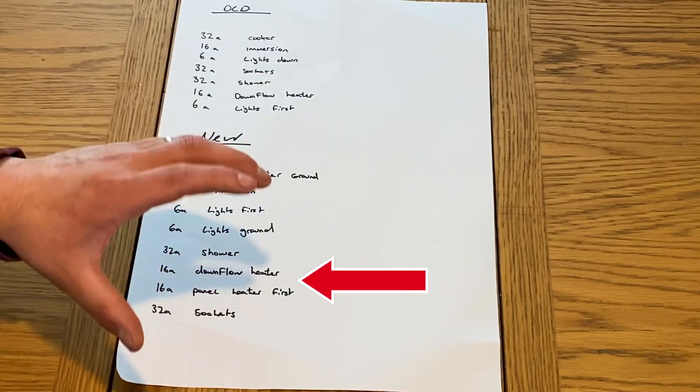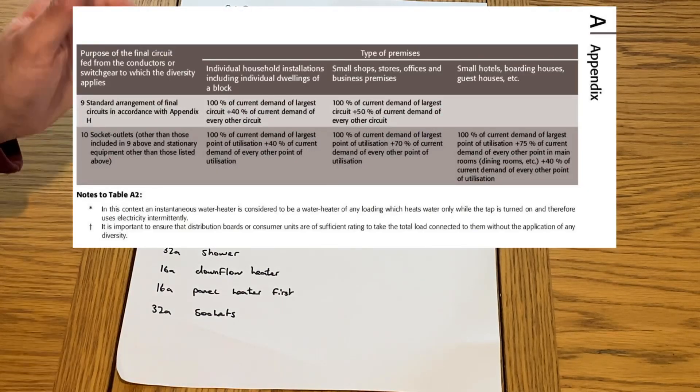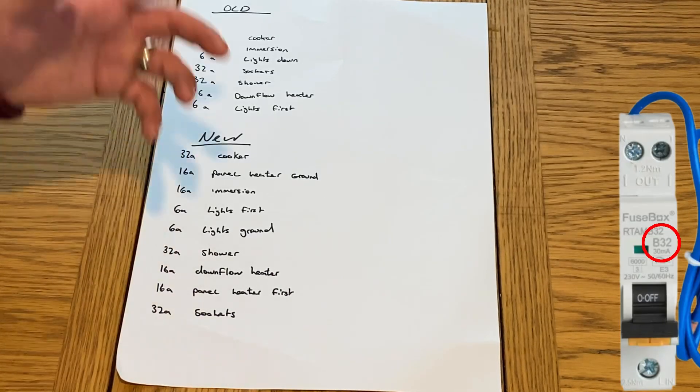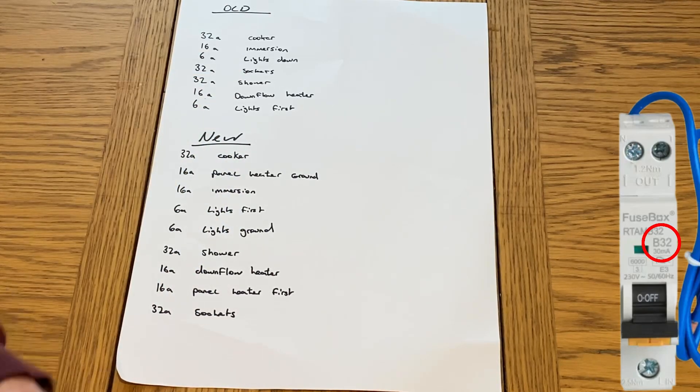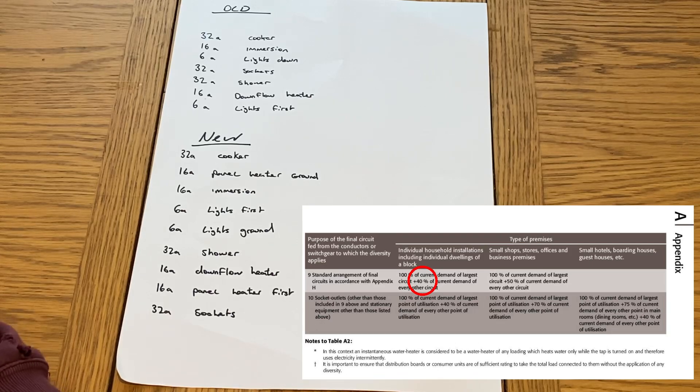The method from the on-site guide basically we're going to take 100% of the largest circuit we have. In this installation is a 32 amp, there's multiple of them so we'll just take one of them. And then what we'll do is we'll do 40% of the remainder.